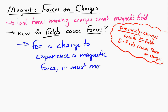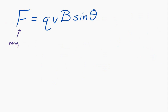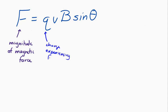We can write down an expression for the amount of magnetic force that a charge would feel. F is equal to QVB sine theta. F is the magnitude of the magnetic force. Q is the charge that's experiencing the force. V is the magnitude of the velocity of the charge. And B is the magnetic field strength.